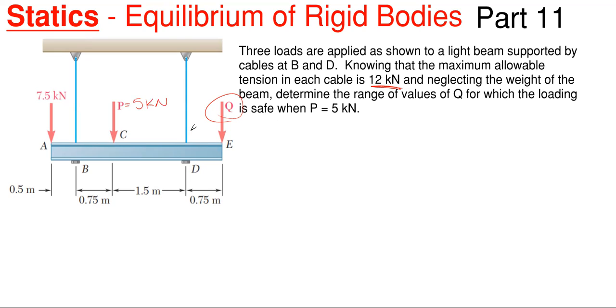So what we got going on here is this problem is saying we have to determine what Q is such that our reactions here at B and D do not go over 12 kilonewtons on each of these. So we have to determine what minimum amount of Q will create, not go over 12 kilonewtons in either one of these, and what maximum range of Q does the same thing.